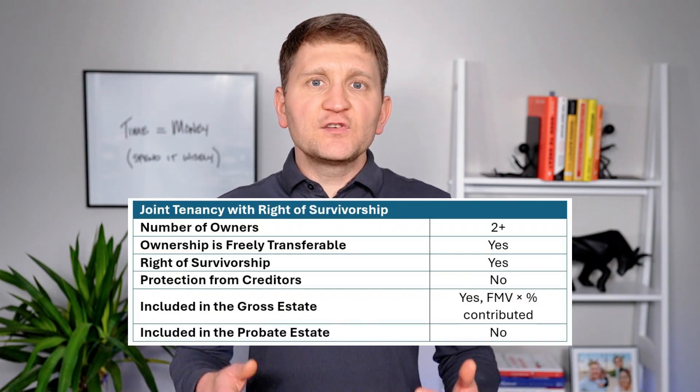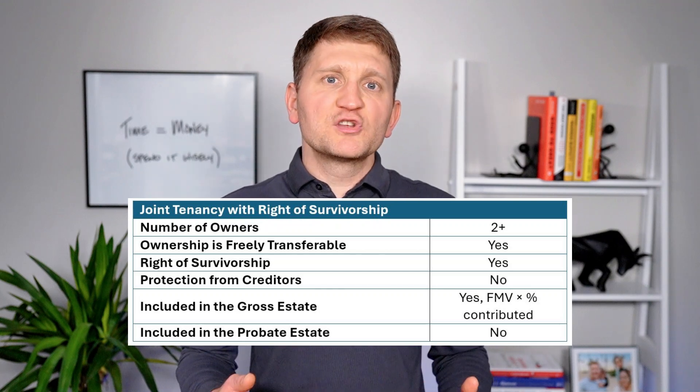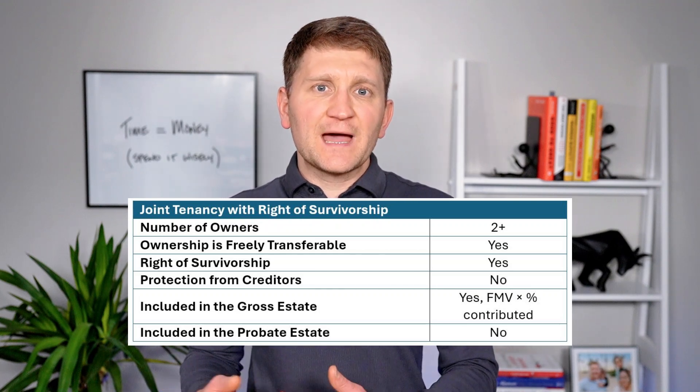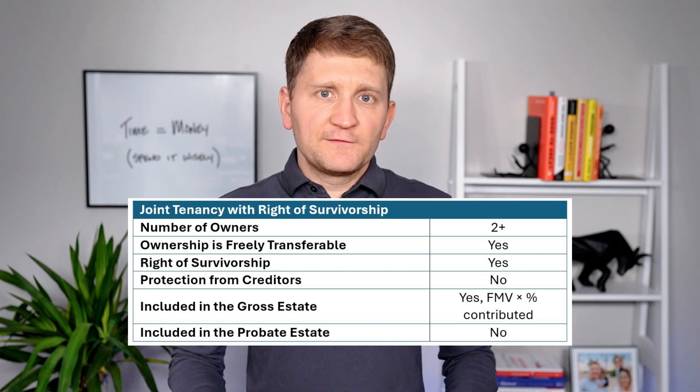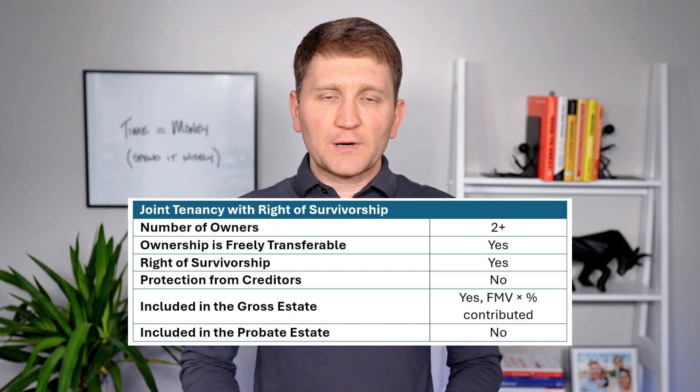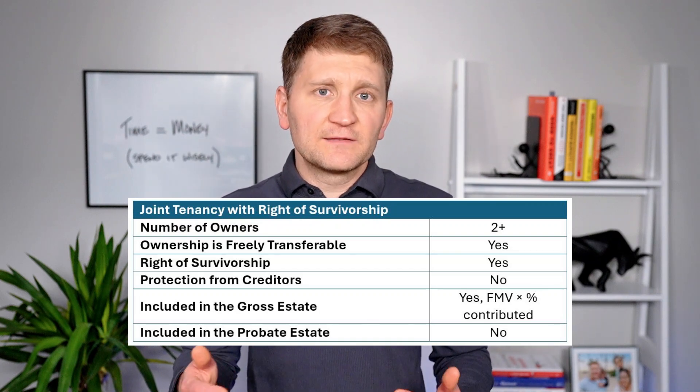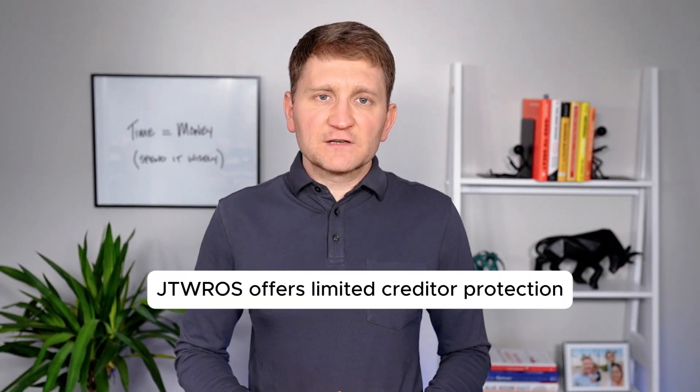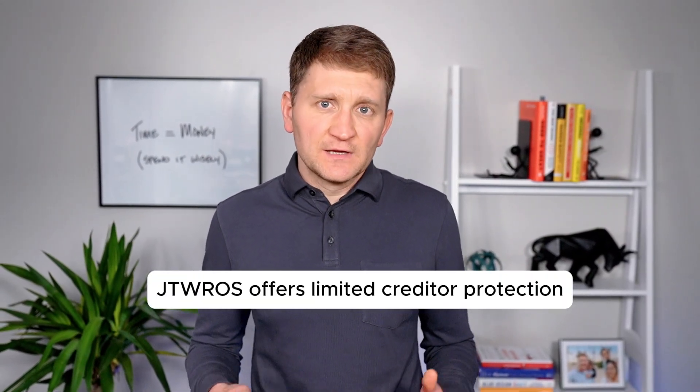For example, if you and your spouse own a home as joint tenants, upon your passing your spouse inherits the entire property without probate. However, if you co-own with a child who didn't contribute to the purchase and you gifted them 50% of the property's value, then under the contribution rules the full property value would be included in your gross estate. As for creditor protection, joint tenancy with right of survivorship offers limited shielding, since a creditor can pursue a debtor's share if that owner has unpaid obligations. Upon the owner's passing, the creditor may lose the claim on that share if it passes to the surviving co-owner.